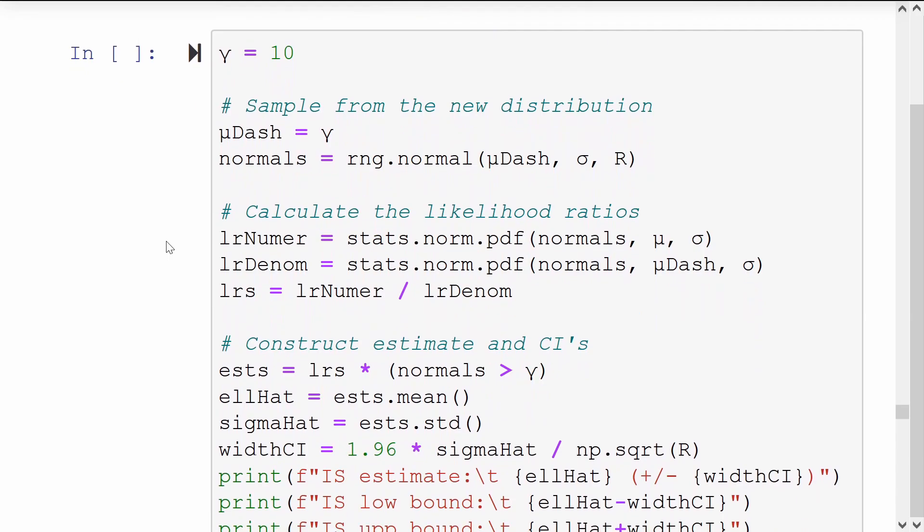This code is identical. All I've done is increase the thresholds of interest, and I've increased the mean of my proposal distribution to match the threshold.